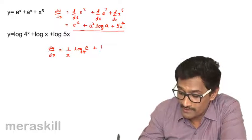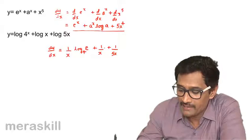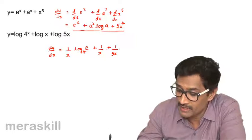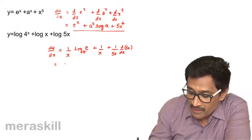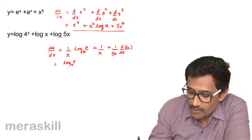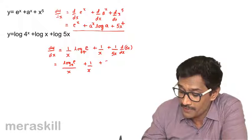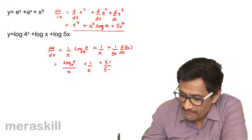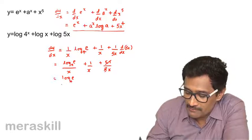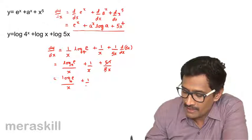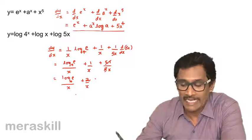For log x, the derivative is 1 by x. The derivative of log 5x is 1 by x times d by dx of x, which is 1 in any case. Here, it is d by dx of 5x — we use the chain rule. So eventually, 5 will come outside and d by dx of x is 1, giving 1 upon 5x. So it's just 1 by x. Therefore, the result is log e to the base 4 upon x, plus 1 by x, which gives 2 by x. This is how we use the addition rule.